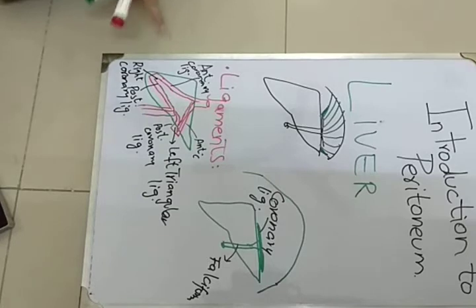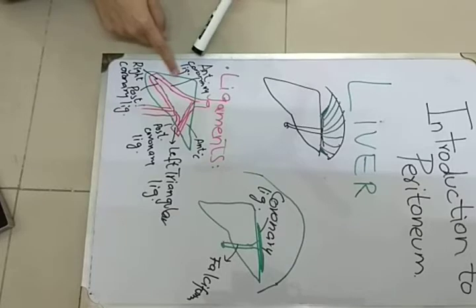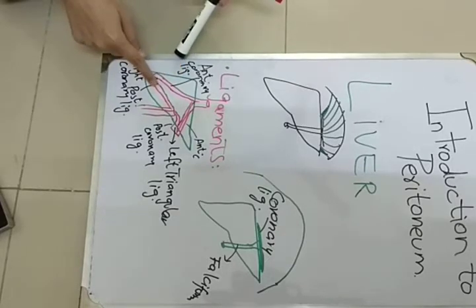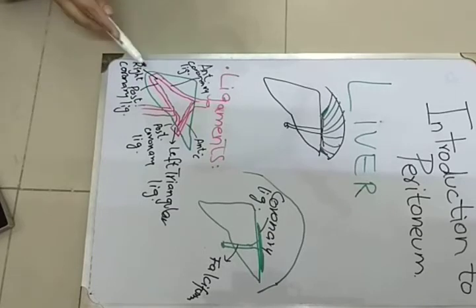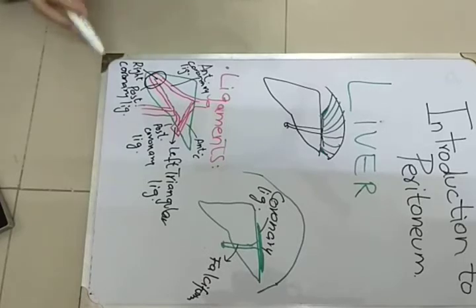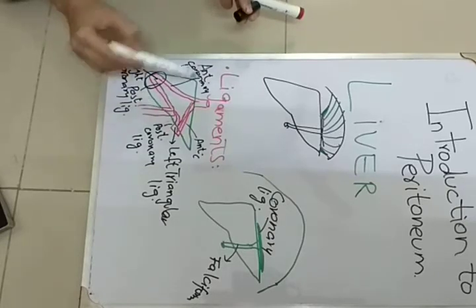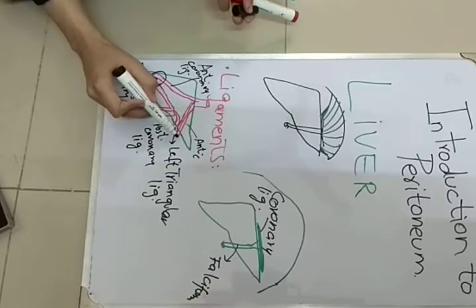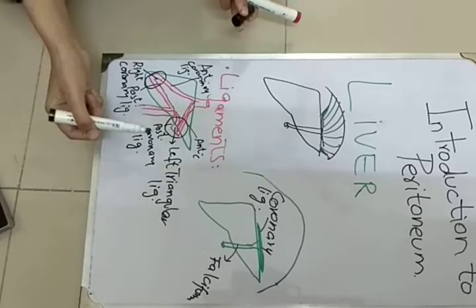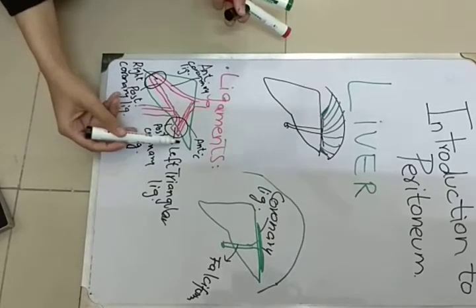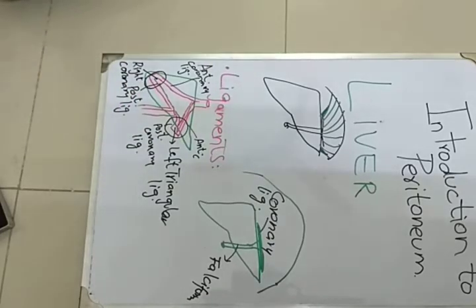Now we will come to this diagram to clear the concept of the triangular ligament. Here I have shown the liver. When we open up the liver, we see the anterior coronary ligament on the right side and the posterior coronary ligament. Where these two join, they form the right triangular ligament. On the left side, we see the anterior coronary ligament and the posterior coronary ligament; where these two ligaments join, they form the left triangular ligament.